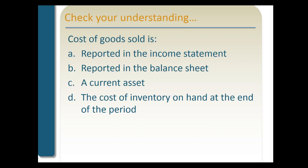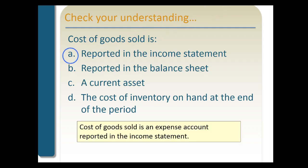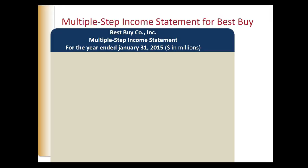Let's ask another question: cost of goods sold is A) reported in the income statement, B) reported in the balance sheet, C) a current asset, or D) the cost of inventory on hand at the end of the period. The answer is A — it's reported in the income statement. Cost of goods sold is an expense account.